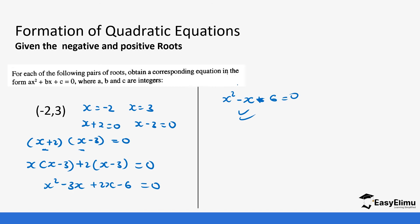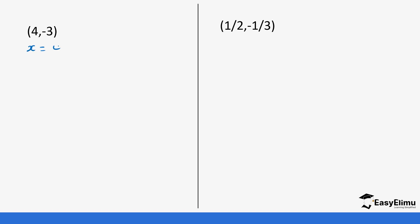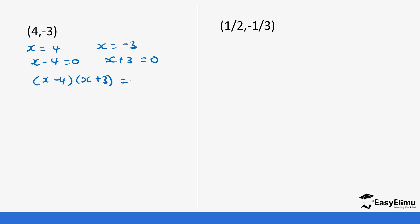Let's do a few more practice questions. So this is going to be x equals four and x equals negative three. This means x minus four equals zero and x plus three equals zero. So this gives us (x minus four)(x plus three) equals zero.